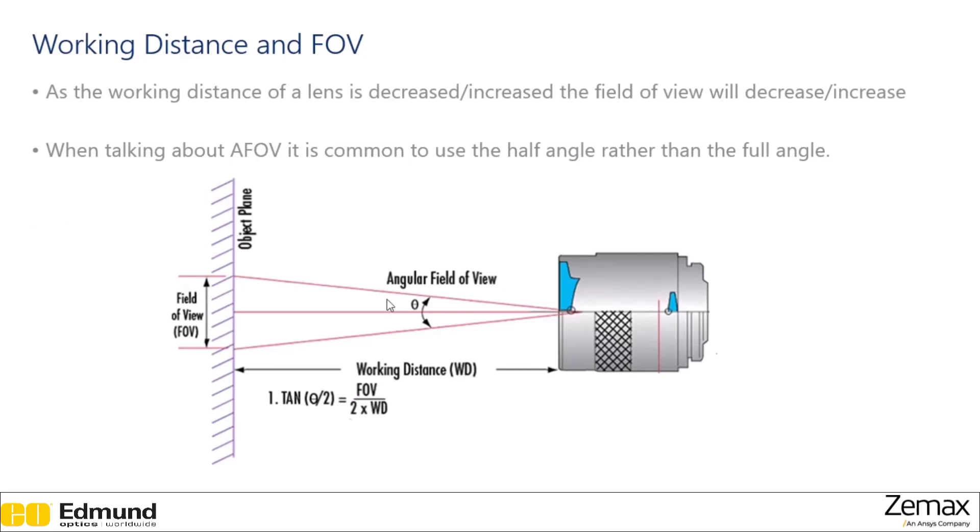The field of view and the angular field of view can be related using some trigonometry. With this line drawn directly from the lens to the field of view, we form a right triangle, so the tangent then of the half-angular field of view is equal to the field of view divided by 2 times the working distance. So we can see that as the working distance changes for a set angular field of view, the field of view will change in size. The closer the object gets, the smaller the field of view.